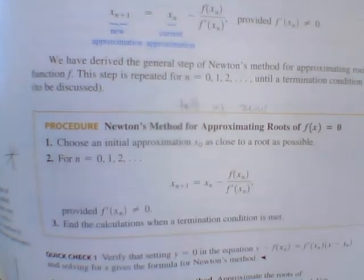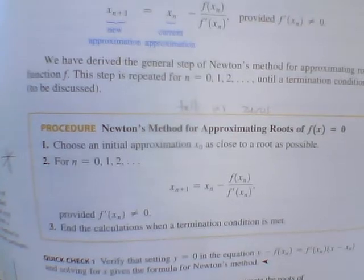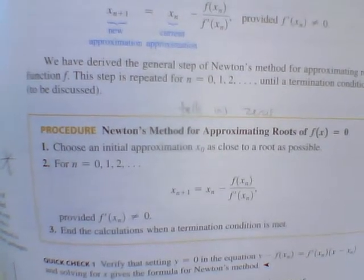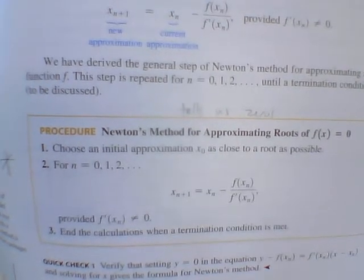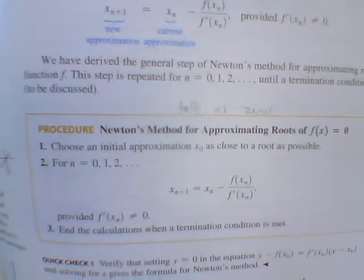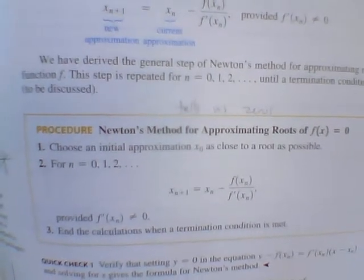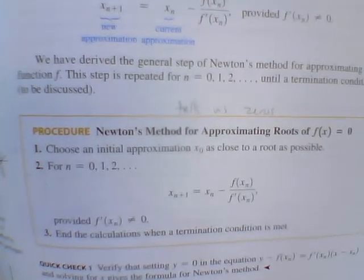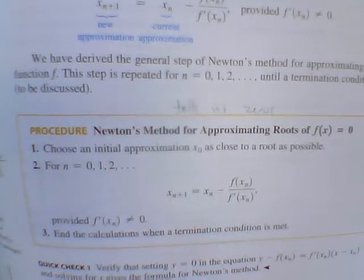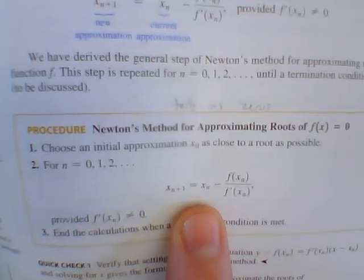So what we do is we start picking real numbers, and we start seeing where are these numbers close to zero. So we have a function, we plug one in, we plug two in, we plug three in, we plug four in, and we see that around four, we're starting to get close, we're really close to zero. So we start there. Once we find this,